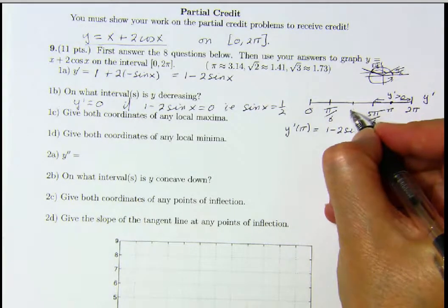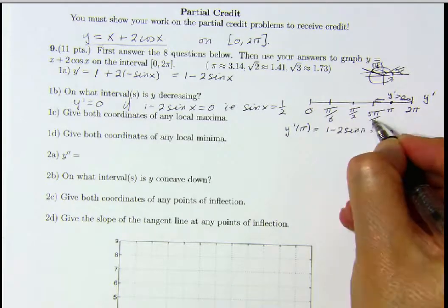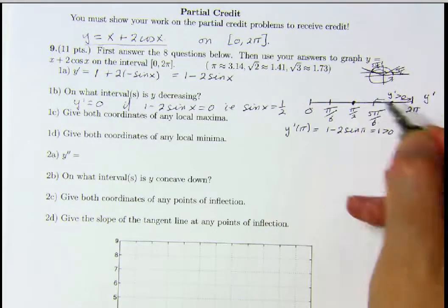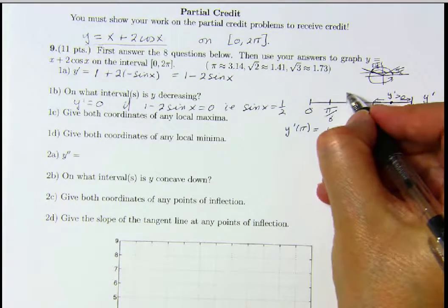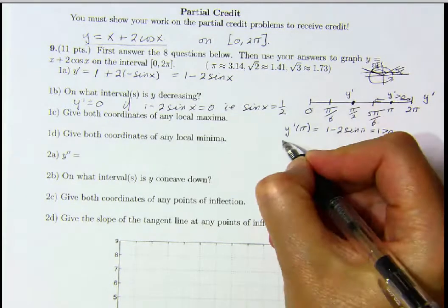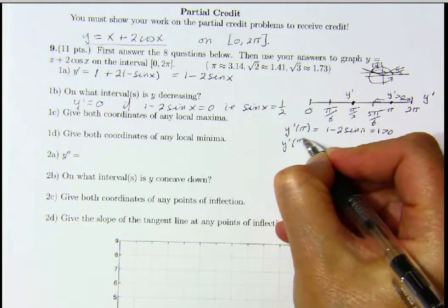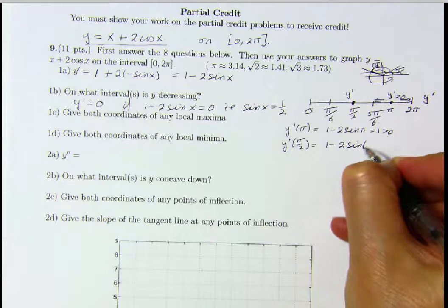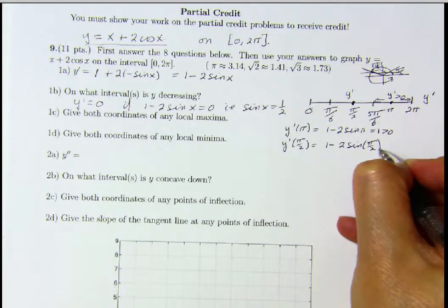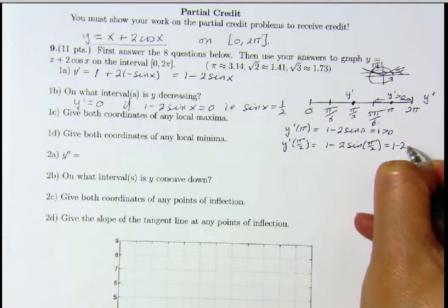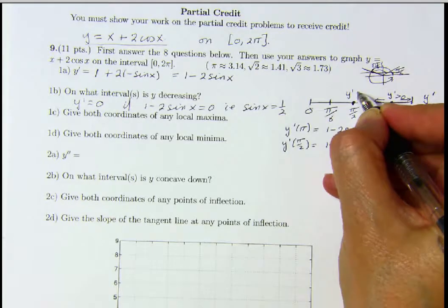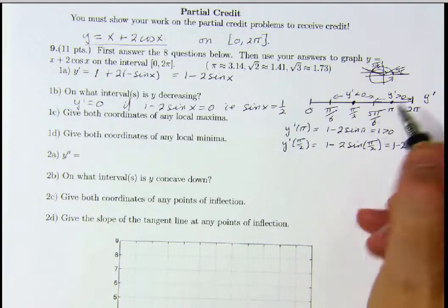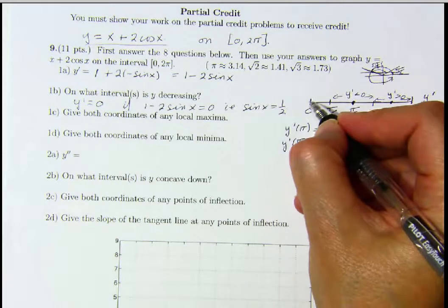A good point to look at in the interval from π/6 to 5π/6 is the point π/2. We have y prime of π/2 equal to 1 minus 2 times sine of π/2, which is equal to 1 minus 2, which is less than 0. So y prime is less than 0 on this interval, so therefore y is decreasing.